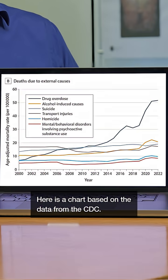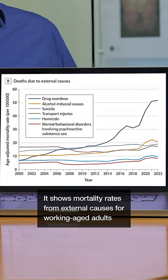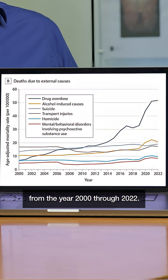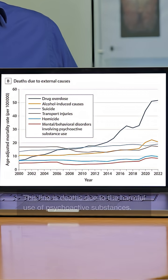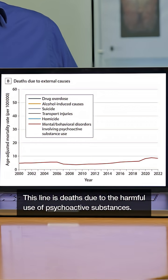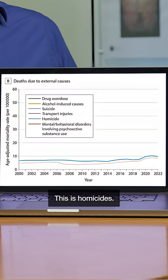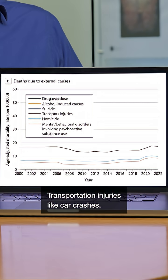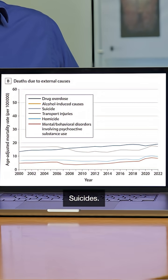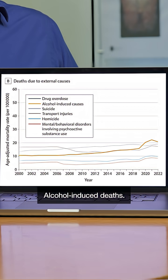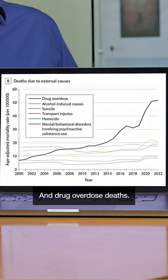Here's a chart based on data from the CDC. It shows mortality rates from external causes for working-aged adults from the year 2000 through 2022. This line is deaths due to the harmful use of psychoactive substances. This is homicides, transportation injuries like car crashes, suicides, alcohol-induced deaths, and drug overdose deaths.